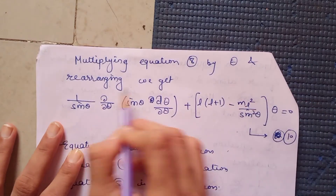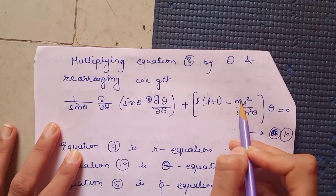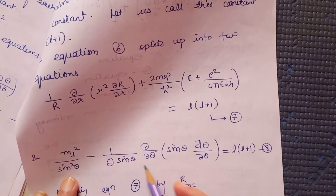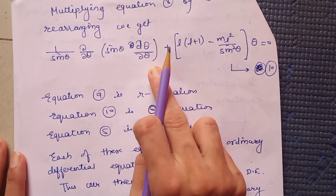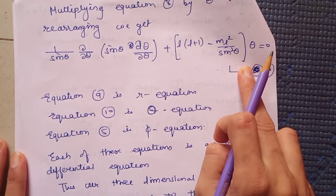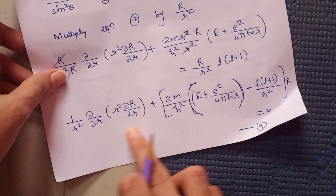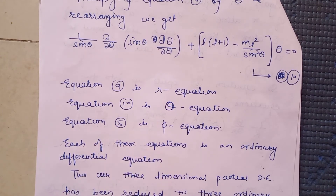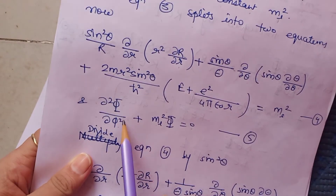Multiplying Equation 8 by Θ and rearranging gives the theta equation (Equation 10): (1/sinθ) ∂/∂θ(sinθ · ∂Θ/∂θ) + [L(L+1) − m_l²/sin²θ]Θ = 0. So we now have three equations: Equation 9 is the R equation, Equation 10 is the theta equation, and Equation 5 (∂²Φ/∂φ² + m_l²Φ = 0) is the phi equation.